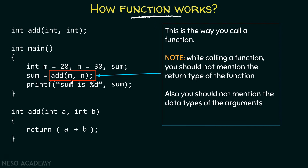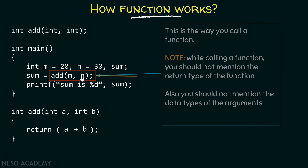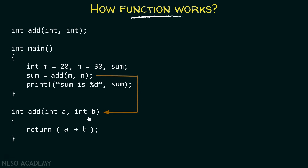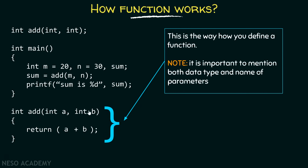When we are calling a function, the control will get transferred from the calling position to the actual definition of the function. In the function definition, you should remember that it is important to mention both the data type and name of the parameters — you should mention everything in the function definition.